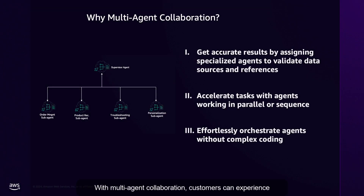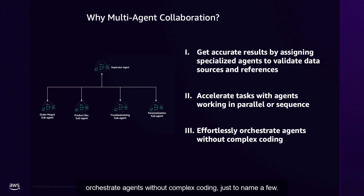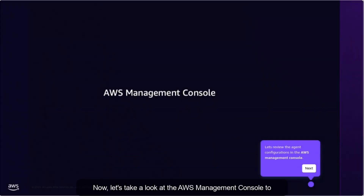With multi-agent collaboration, customers can experience capabilities like getting accurate results by assigning specialized agents to validate data sources and references, accelerate tasks with agents working in parallel or sequence, and effortlessly orchestrate agents without complex coding, just to name a few. Now let's take a look at the AWS Management Console to examine one of the ways Bedrock agents can be created.